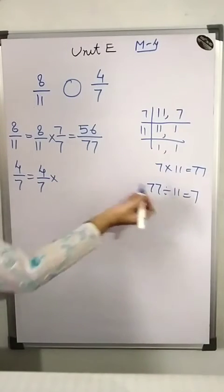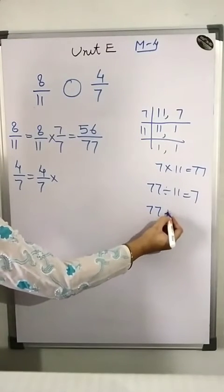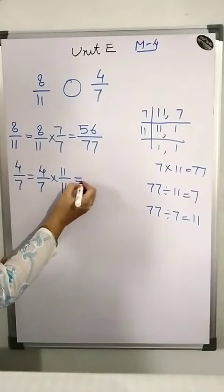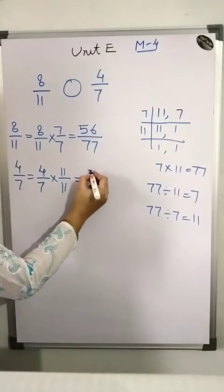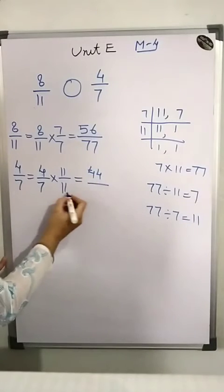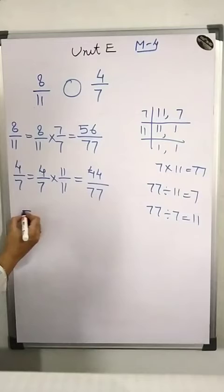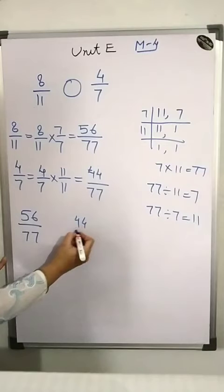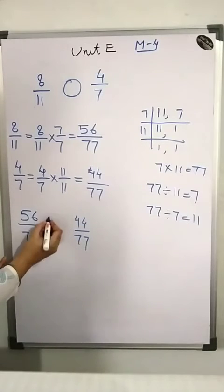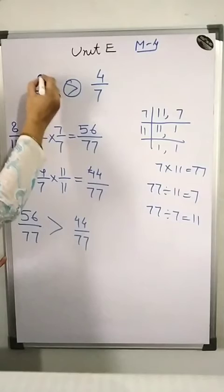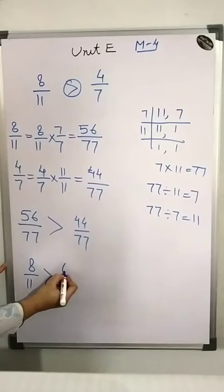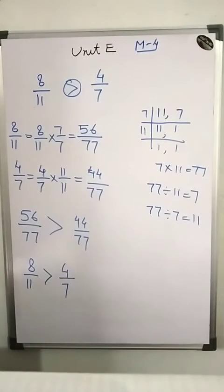For 4 upon 7: divide 77 by 7 to get 11, so multiply by 11 upon 11. This gives 44 upon 77. Comparing 56 upon 77 and 44 upon 77, since 56 is greater, 8 upon 11 is greater than 4 upon 7.